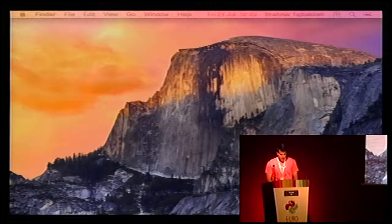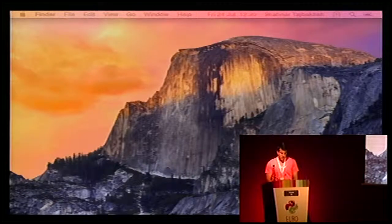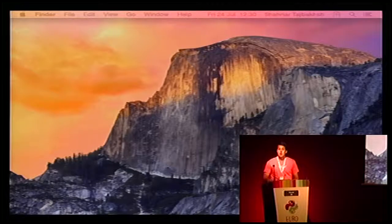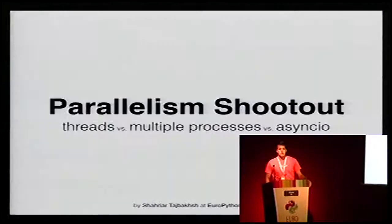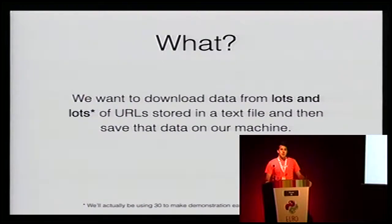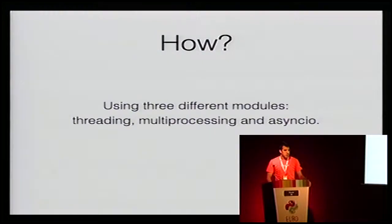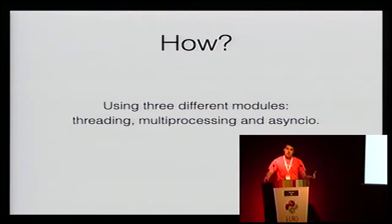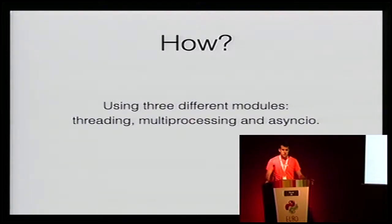Today we're going to talk about parallelism. The point is to take one problem and try to approach solving it using different techniques — threading, multiprocessing, or async I/O — and get a feel for how each of them works. The problem: we have lots of URLs in a file, and we want to download their content and store it on our machine. We'll use each library separately, first to understand the mechanics of how they work, and second to do a simple benchmark.